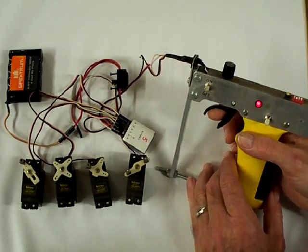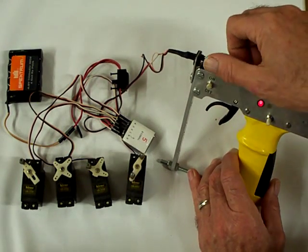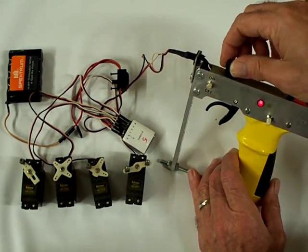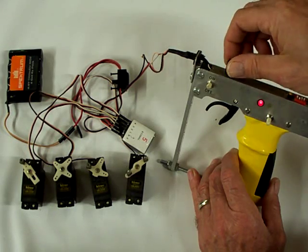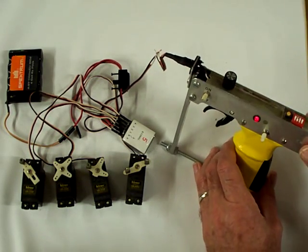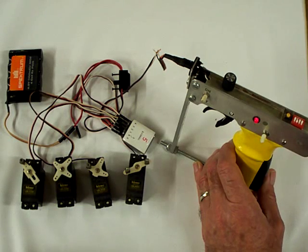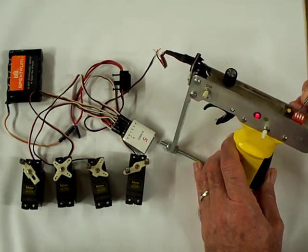It also has a trim switch on the top for trimming out the throttle servo, and a dip switch on the top of the handle that will reverse the throttle servo.